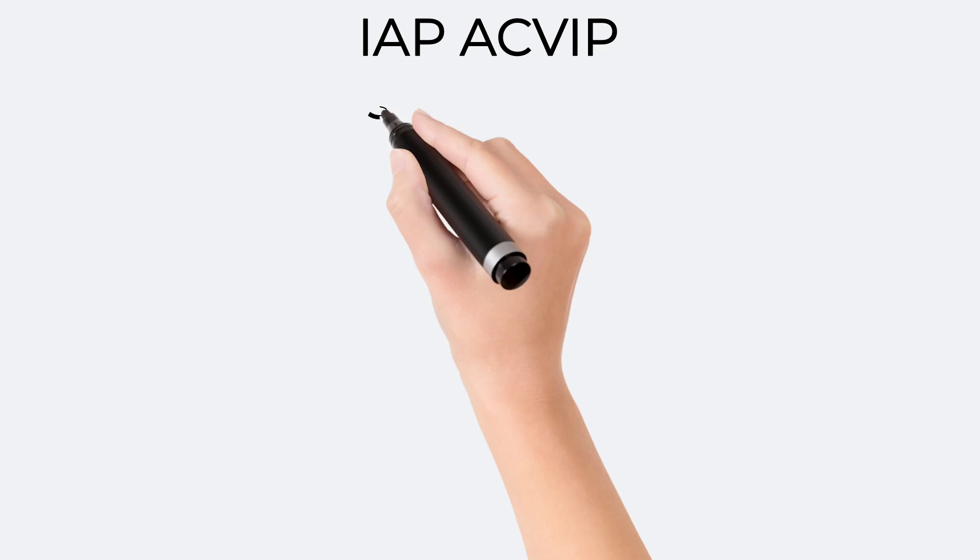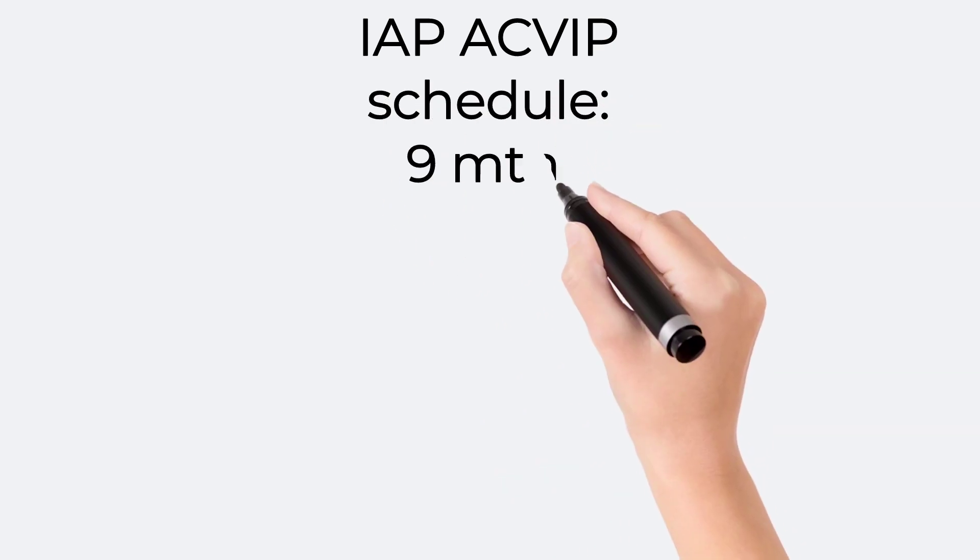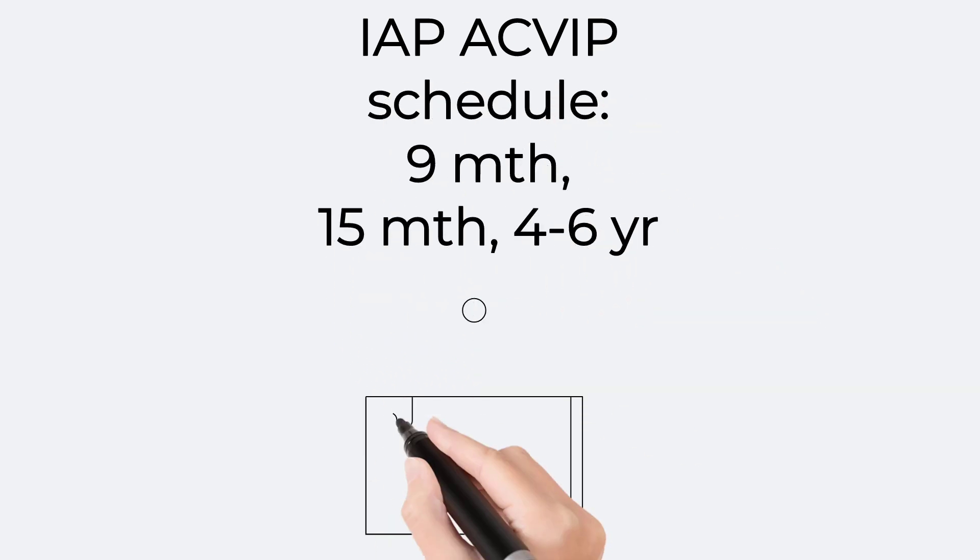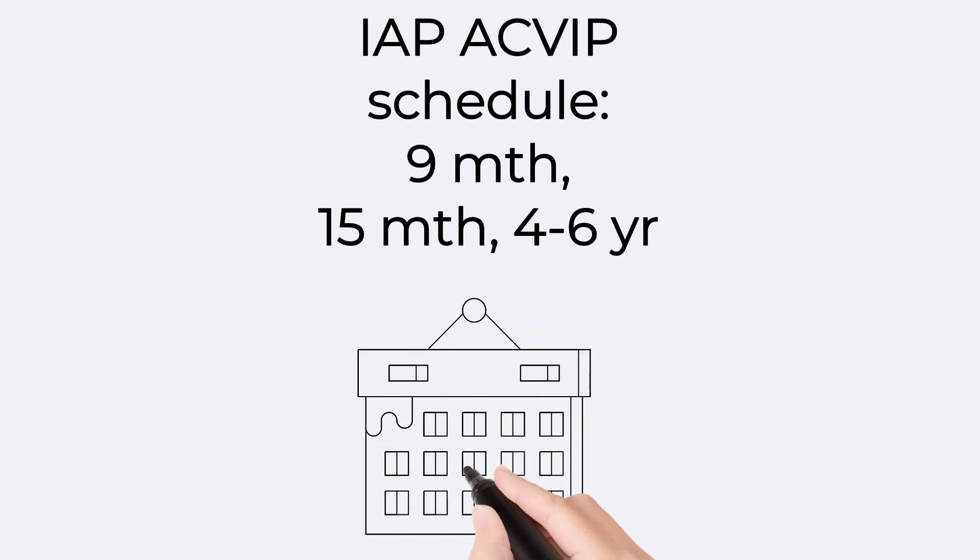As per the IAP-ACVIP Schedule, MMR vaccine is recommended at 9 months, 15 months, and between 4 to 6 years of age.